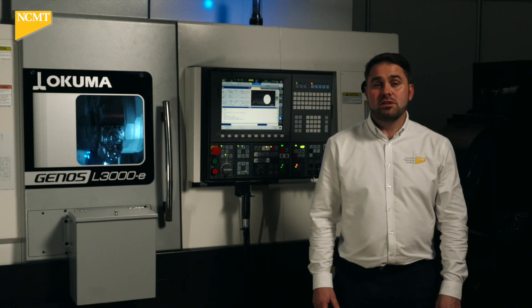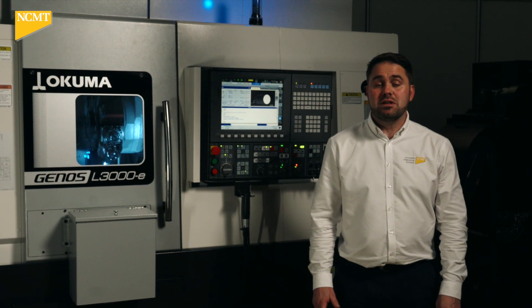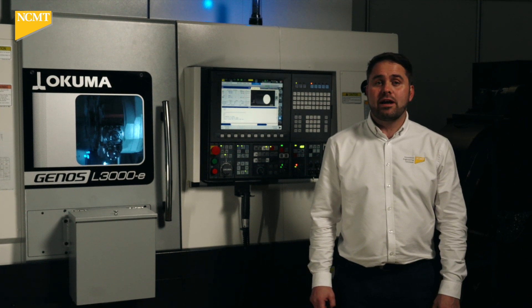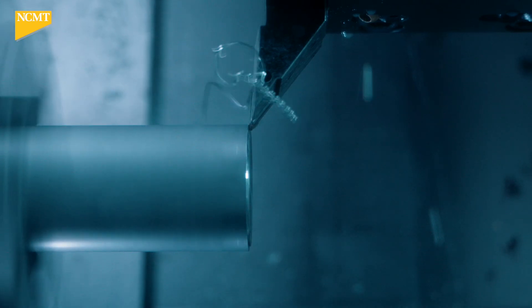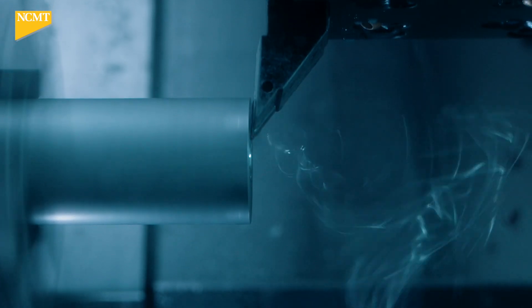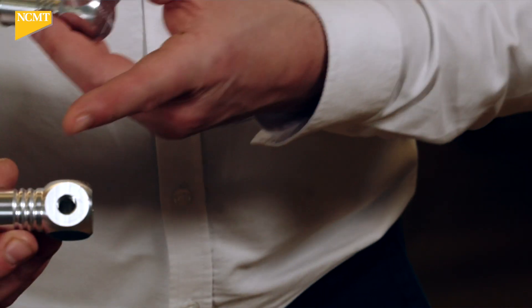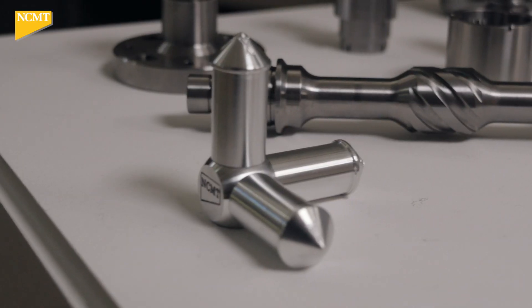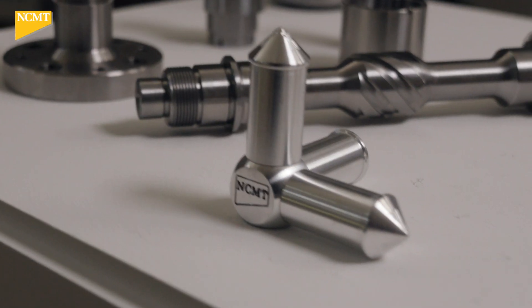This particular model is our MYW, which means it has milling capability, a Y axis, and a subspindle. The component we're making is an aluminum component for a coordinate system. It's a three part component that screws and fixes together.